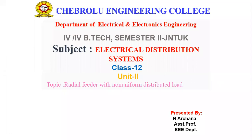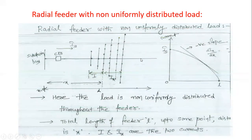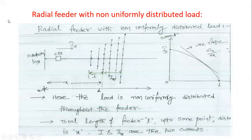Good afternoon. Today we are going to discuss about the radial feeder with non-uniform distributed load. In the previous class we discussed about the radial feeder with uniform distributed load. First of all, what is meant by radial feeder? The feeder that will be fed with only one end — the other end is connected to the load. This is the radial feeder with non-uniformly distributed load.